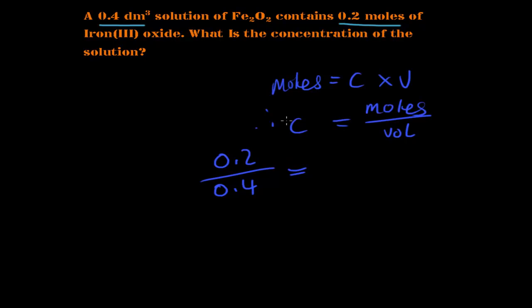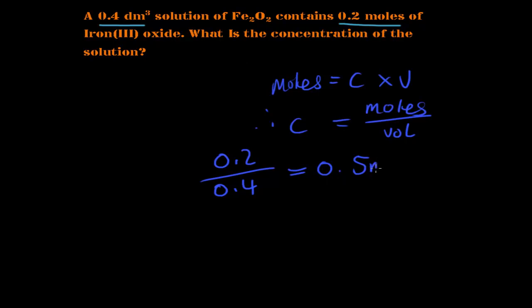So 0.2 divided by 0.4 — I mistakenly multiplied instead of dividing — this gives us 0.5. So the concentration is 0.5 mol/dm³, and that is your answer.